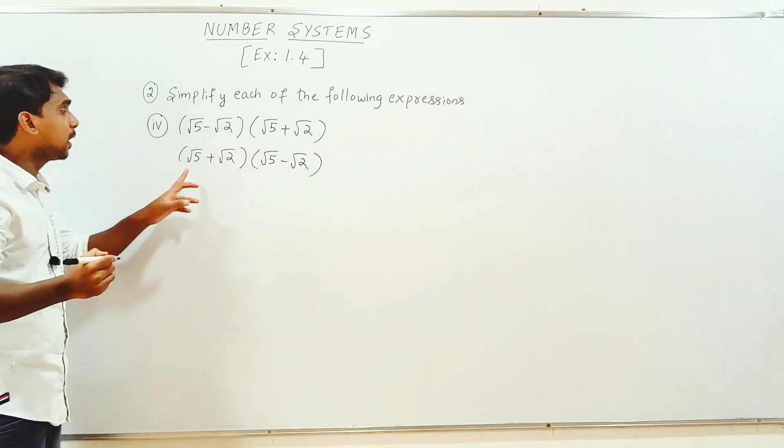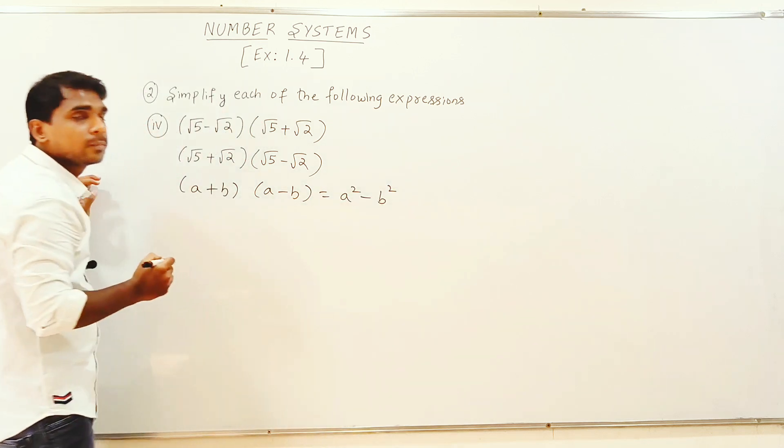This one, I'm going to write a plus b into a minus b. If you write this one, you write a plus b into a minus b. So, formula is a square minus b square.